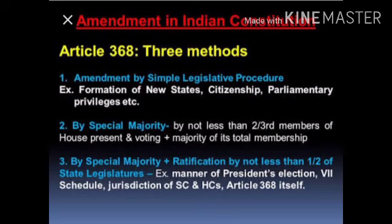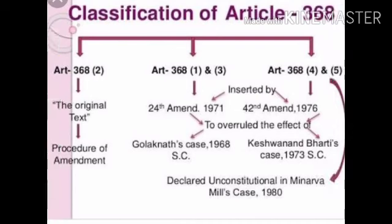Under Article 368, three methods of amendment are given. The first is amendment by simple legislative procedure, which requires a simple majority — that is, 50% plus one. The second is amendment by special majority, meaning a two-thirds majority. The third is special majority plus ratification from states.